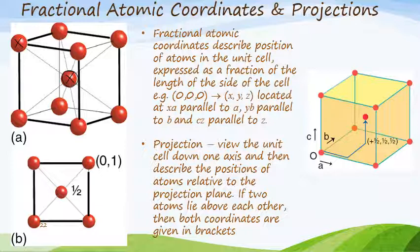Other times we want to show a specific view down a certain unit cell axis — this is called a projection. A projection is the view that we look down one of the unit cell axes. In a cubic structure, it doesn't matter which one you look down because each of the sides of the cube are all the same length. With the projection, we view the unit cell down one axis, describe the positions of the atoms relative to the projection plane, and if two atoms lie on top of one another, both coordinates are given in brackets.